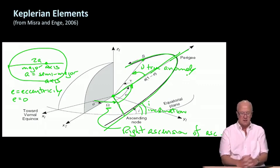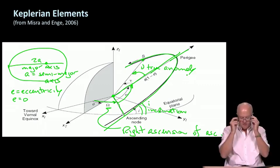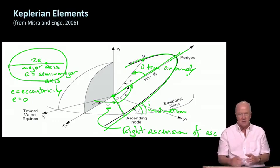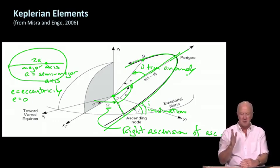So those are the six Keplerian parameters. This is arguably the most important data coming down in the GPS navigation message. I think you would have to rank the description of the GPS satellite clock offset as equally important, but these are really the major things and the most important things coming in the navigation message.